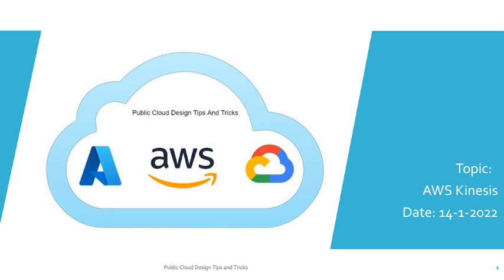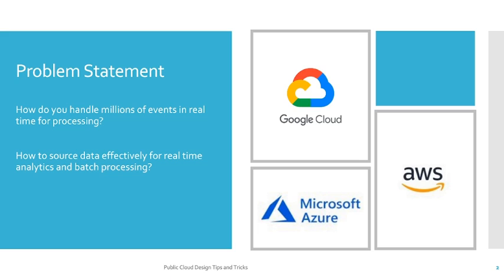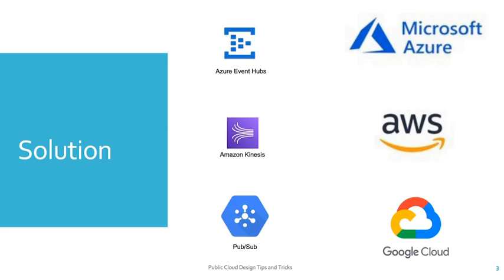Today we are going to discuss about AWS Kinesis Service. Today's problem statement: how do you handle millions of events in real time for processing? How to source data effectively for real time analytics and batch processing? To achieve this, Microsoft Azure has Azure Event Hubs, AWS has Amazon Kinesis Services, and Google Cloud has PubSub service.